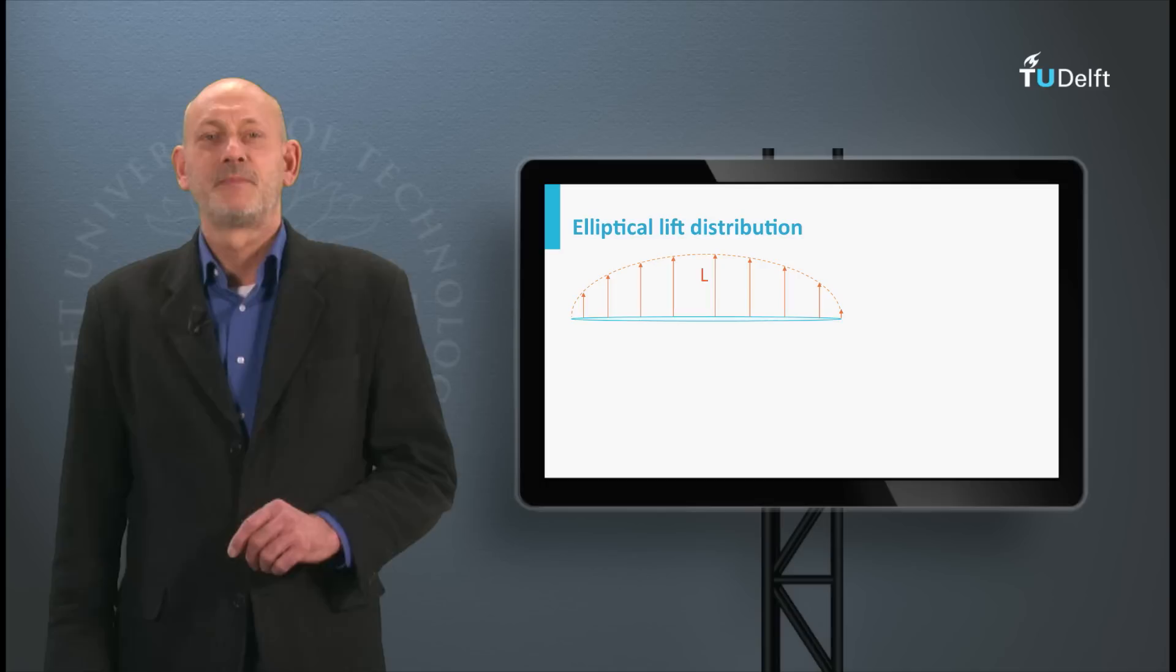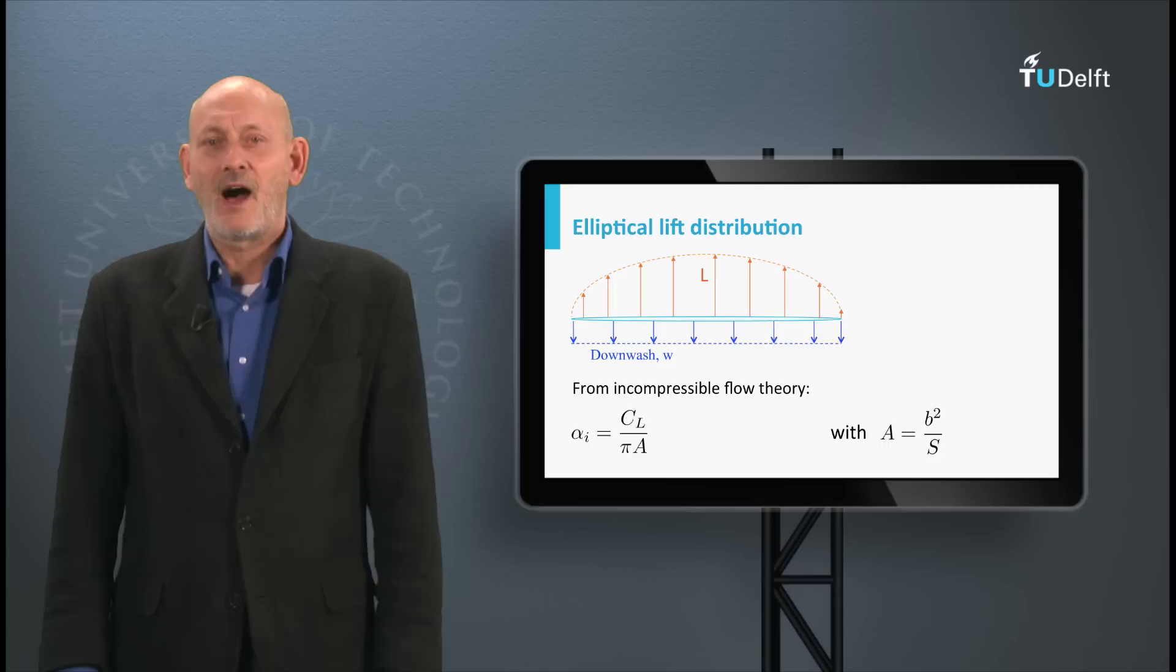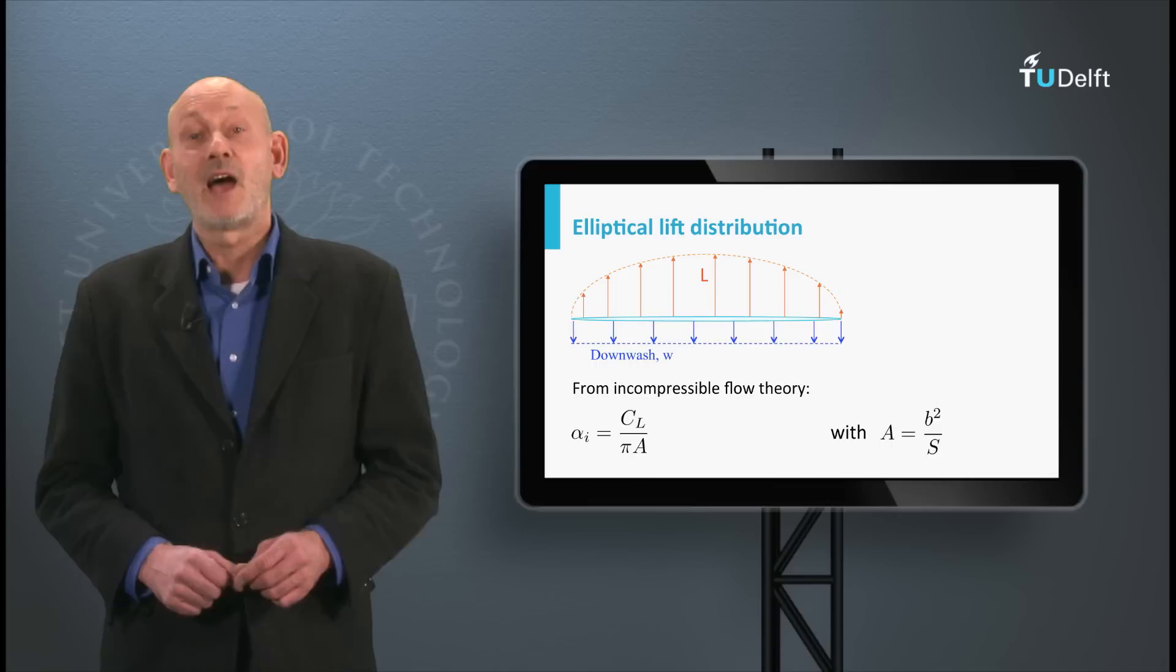From incompressible flow theory, a number of things can be derived for this situation. If the lift distribution along the wing is elliptical, as shown here, the downwash along the entire wing is constant. The induced angle in this situation can be written as alpha i is CL divided by pi times the aspect ratio A, which is given as the wingspan squared over the wing area.